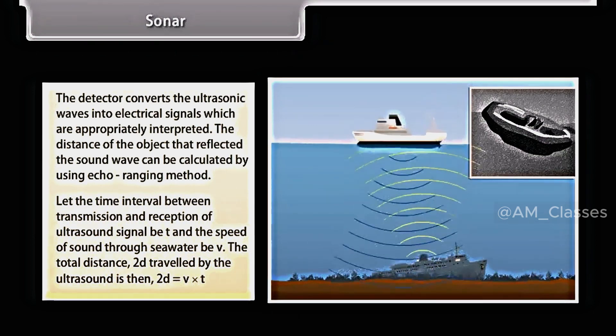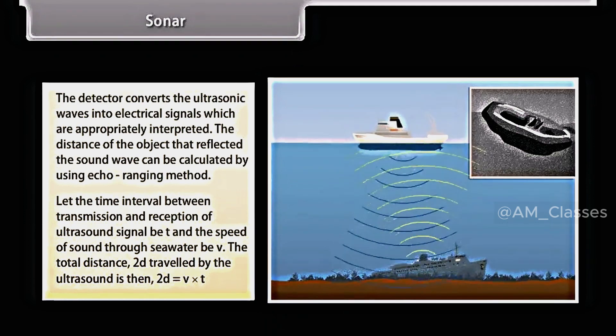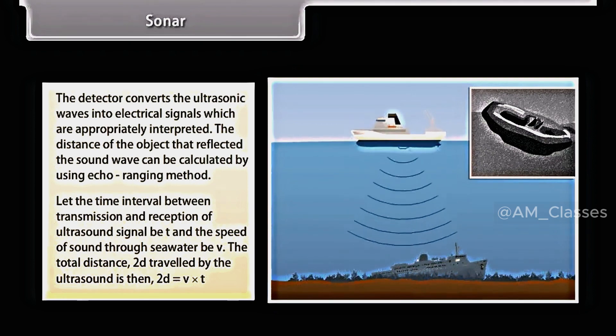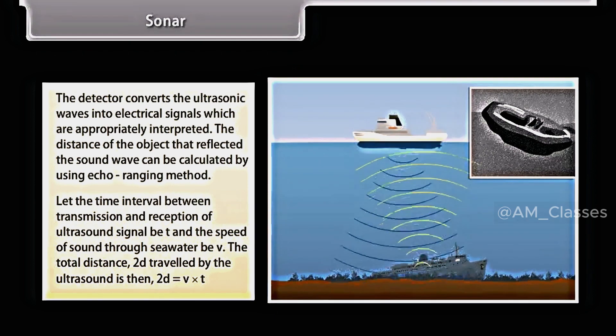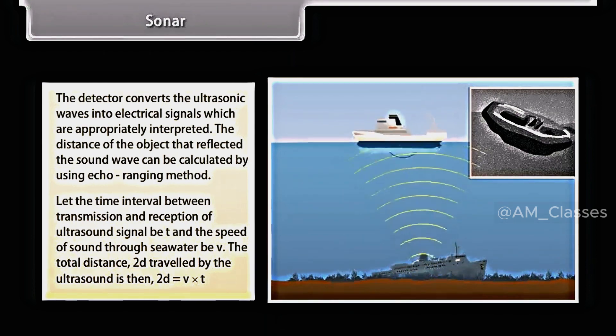Let the time interval between transmission and reception of ultrasound signal be T and the speed of sound through seawater be V. The total distance, 2D, travelled by the ultrasound is then 2D is equal to V into T. This is the echo-ranging method.